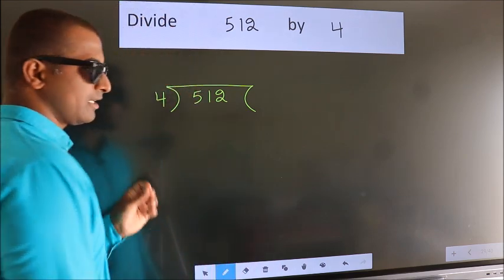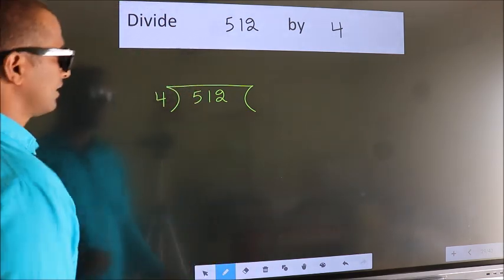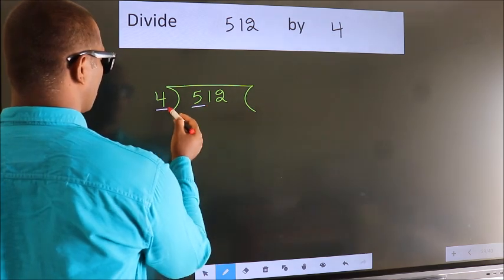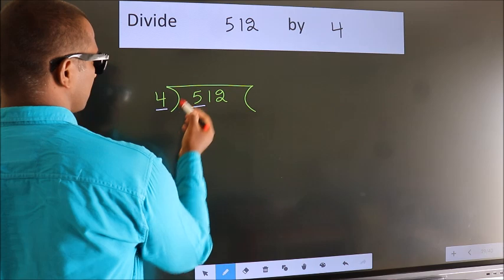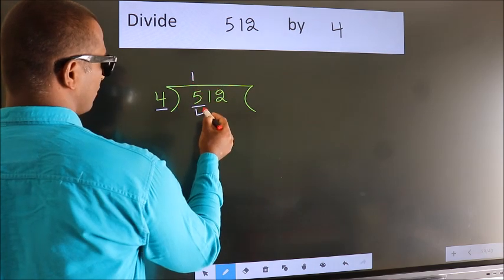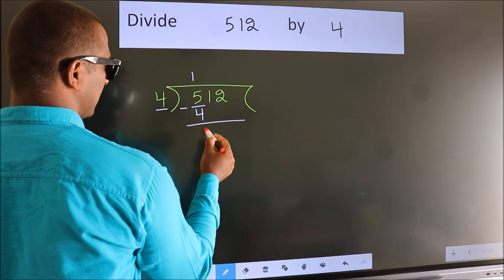This is your step 1. Next, here we have 5, here 4. A number close to 5 in the 4 table is 4 ones, 4. Now, we should subtract. We get 1.